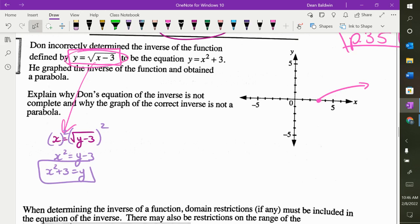So I get that. So it looks like Mr. Don is correct, because he said that's what the inverse is. Why is he not correct? Why is this not the inverse of that? I just showed you. It looks like it is. Why is it not?